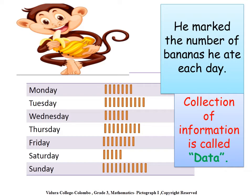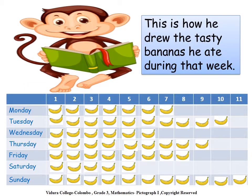Children, these numbers of bananas are information. Collection of information is called data. Now, can you see this table? This is how he drew the bananas he ate during that week.